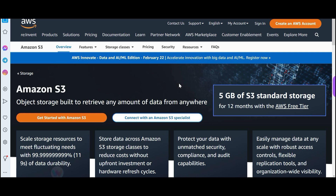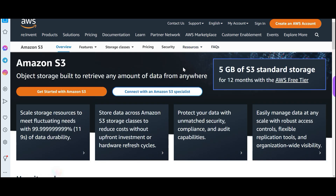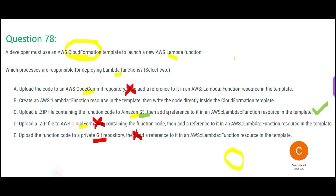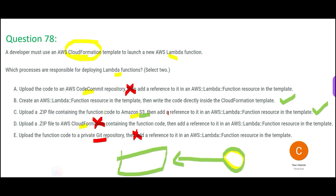Use S3 — it is dirt cheap. You store your zip file on S3, then create a reference to it in the CloudFormation template. That is what option B says: create a Lambda function resource in the template. Option C says write the code directly inside the CloudFormation template. Option says upload the zip file to S3 and add a reference to it in the function resource.